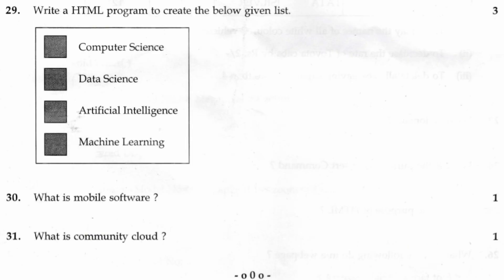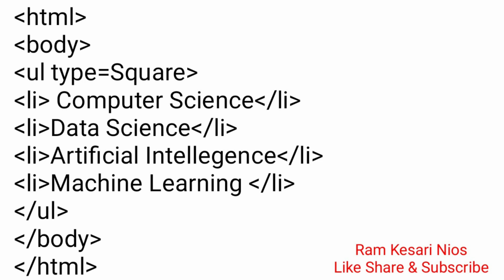Question 29: Write a HTML program to create the below given list: Computer Science, Data Science, Artificial Intelligence, Machine Learning. <HTML><body><ul type="square"><li>Computer Science</li><li>Data Science</li><li>Artificial Intelligence</li><li>Machine Learning</li></ul></body></HTML> Note: There is part marking in every HTML program — 1 mark for HTML and body tag, 1 mark for UL tag, 1 mark for Li tag.